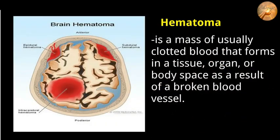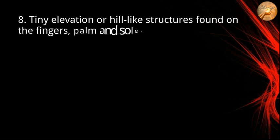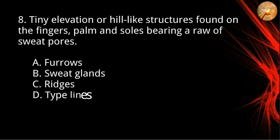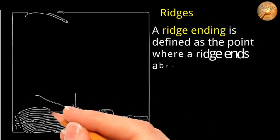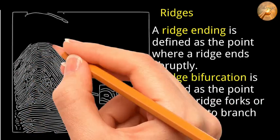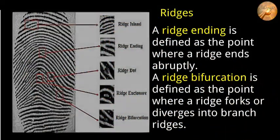Number eight: tiny elevation or hill-like structures found on the fingers, palm, and soles, bearing rows of sweat pores. A) furrows, B) sweat glands, C) ridges, D) type lines. The correct answer is letter C, ridges. The two most prominent local ridge characteristics are ridge ending and ridge bifurcation. A ridge ending is defined as the point where a ridge ends abruptly; a ridge bifurcation is defined as the point where a ridge forks or diverges into branch ridges. Other characteristics include ridge island, ridge dot, and ridge enclosure.